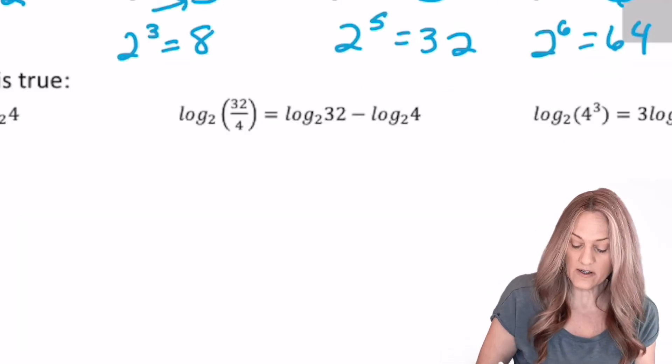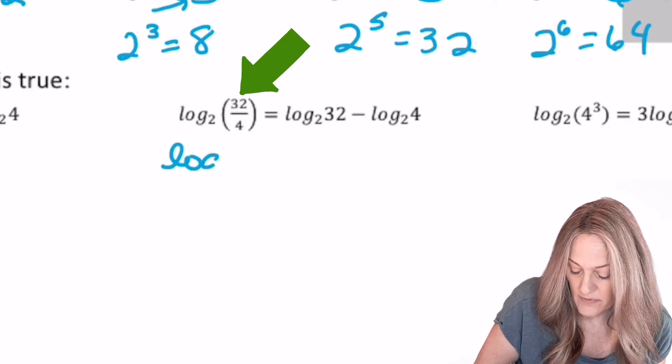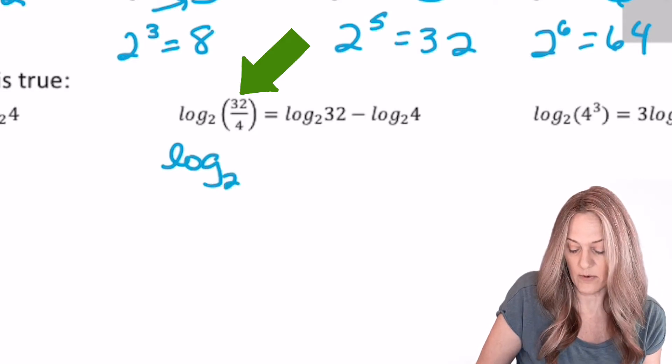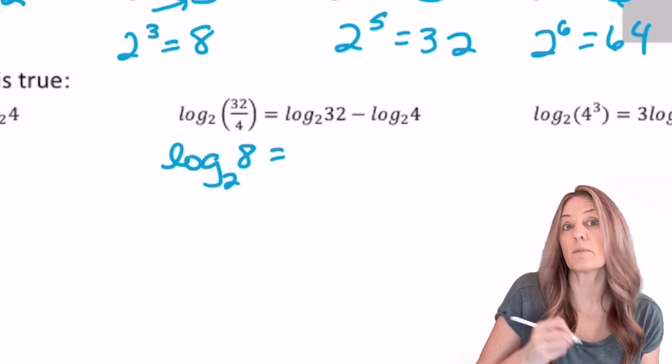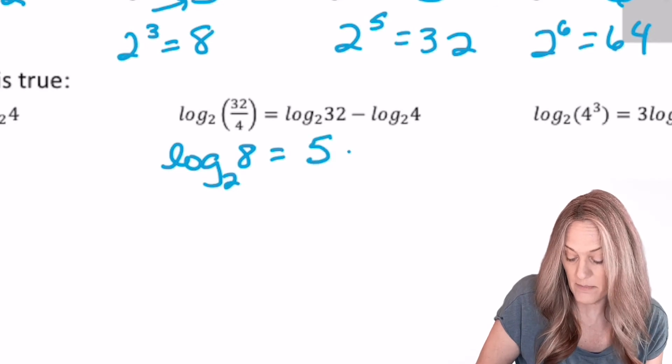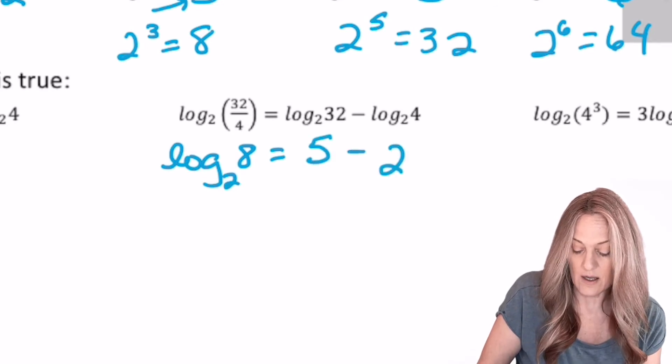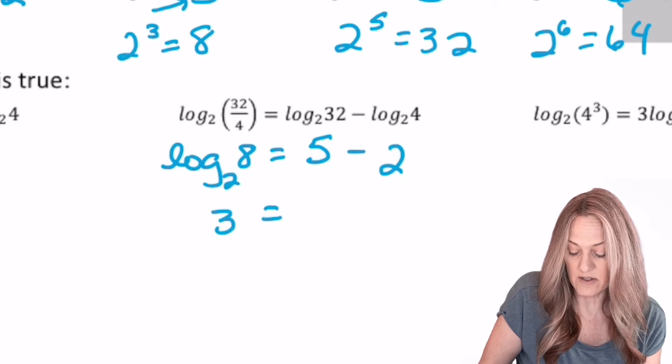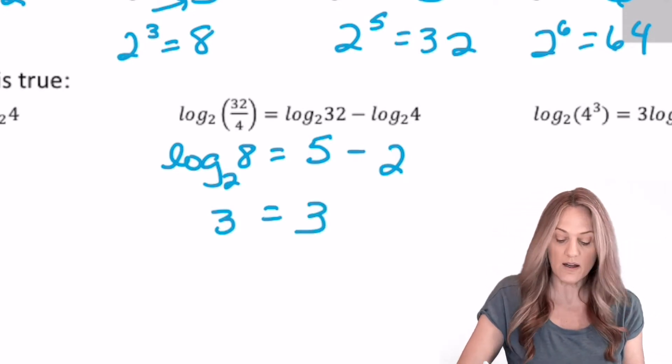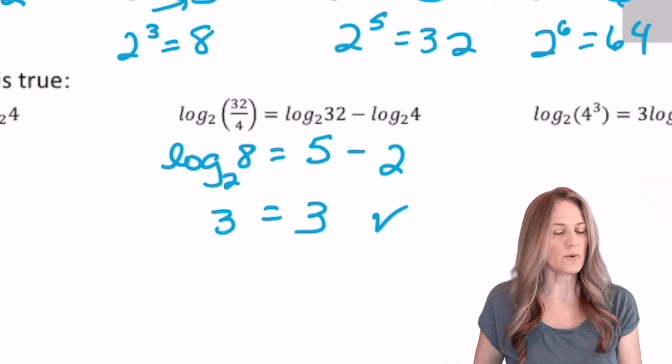Pretty cool. Let's look at our next one. Log base 2 of 32 divided by 4. Well, that's an 8. And then log base 2 of 32 is 5, minus log base 2 of 4 is 2. Log base 2 of 8 is 3. 5 minus 2 is 3. Check! Another one that is true. We've shown it true.